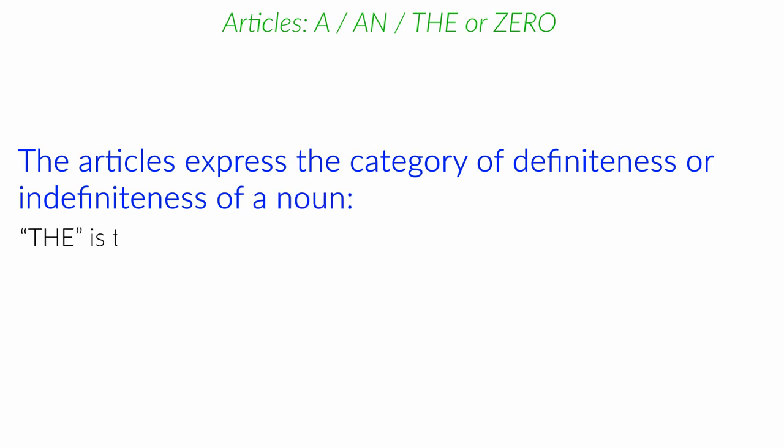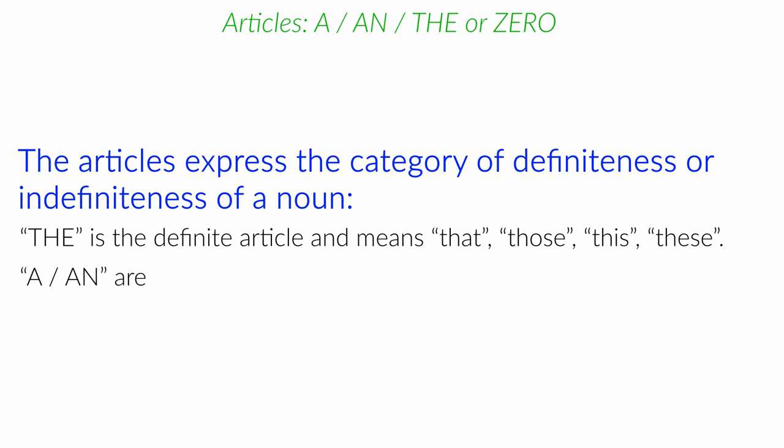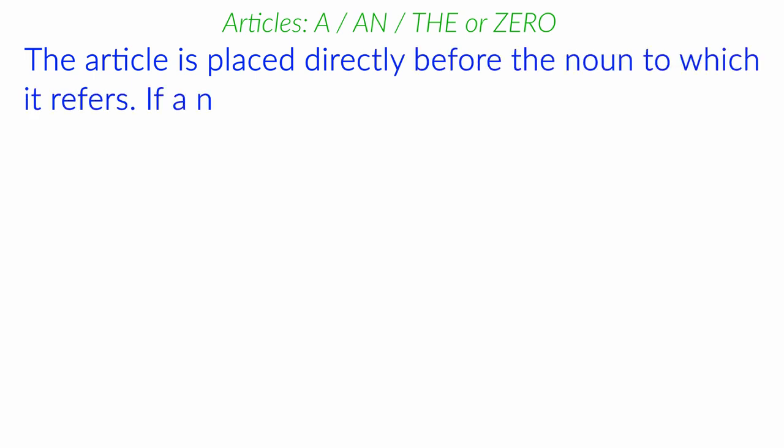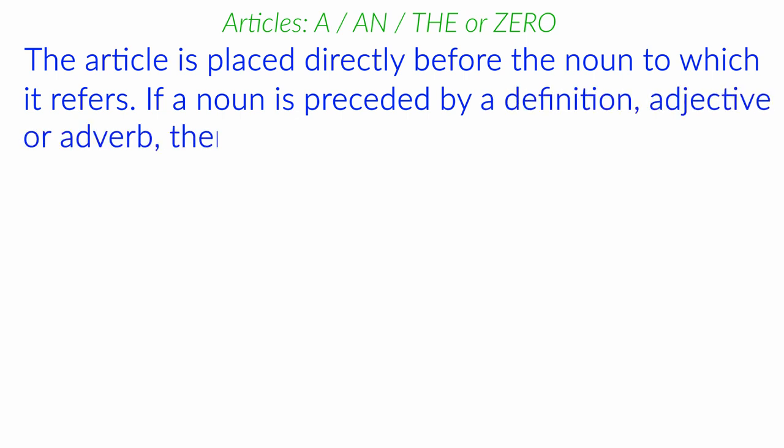The is the definite article and means that, those, this, these. A or an are indefinite articles and refer to any, one. The article is placed directly before the noun to which it refers. And if a noun is preceded by a definition, adjective or adverb, then the article is placed before the phrase.